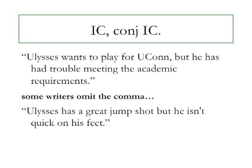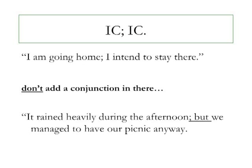Here are two sentences showing coordination with a conjunction: 'Ulysses wants to play for UConn, but he has had trouble meeting the academic requirements.' Some writers omit the comma, especially for shorter clauses, as in: 'Ulysses has a great jump shot but he isn't quick on his feet.' Here are two sentences showing coordination with a semicolon. Don't add a conjunction when using a semicolon — you already have what you need.